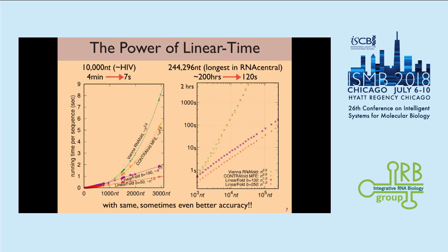How important is linear time prediction? Consider some super-long RNA sequences. If an RNA sequence has 10,000 nucleotides, conventional methods can predict the secondary structure in about four minutes, and we can do it in seven seconds. More strikingly, we took the longest RNA sequence from the RNAcentral database, which is a quarter-million nucleotides in length, and our algorithm takes about two minutes. The baseline needs about 200 hours and a huge amount of memory due to its quadratic memory requirement, while ours is linear.